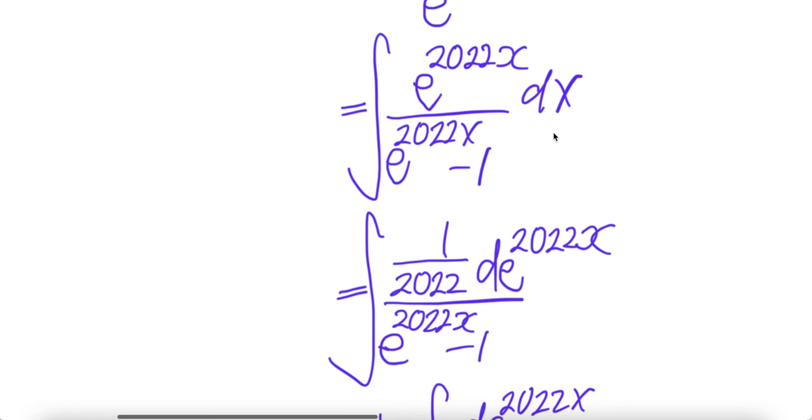Now let us look at the derivative of e to power 2022x. The derivative e to power 2022x is e to power 2022x times the derivative of this, which is 2022, but there is no 2022. Therefore we have to divide by 2022 to cancel so that the upstairs here is the same thing as that.